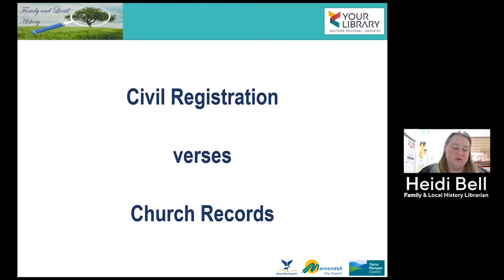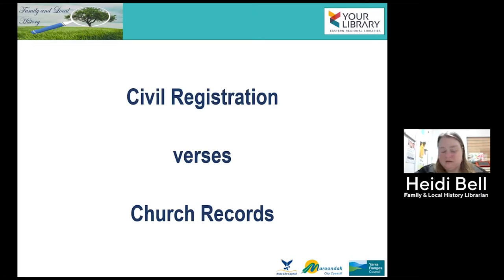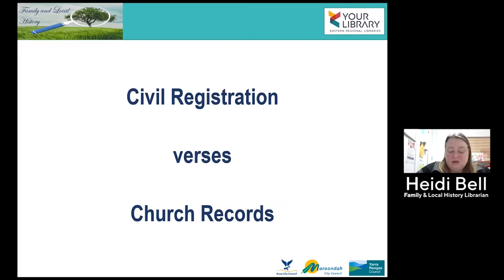Civil registration versus church records — what is the difference? Civil registration is the certificates we use today: birth, death and marriage. They list dates, places, names, parents, etc. Most countries of the Western world began civil registration around the 1837 mark. Church records are those large books held by the church, and they list very minimal information — usually only dates, names, and sometimes a father's name. Most churches had three books: one for births, one for marriages, and one for deaths. Many churches did continue to use these books even after civil registration, just to keep a list of who was born, married or died associated with their church. Both are considered primary resources.